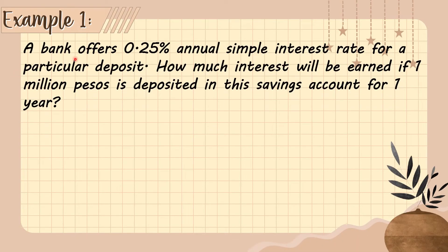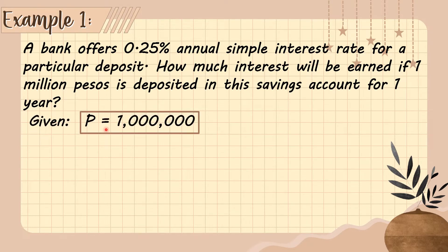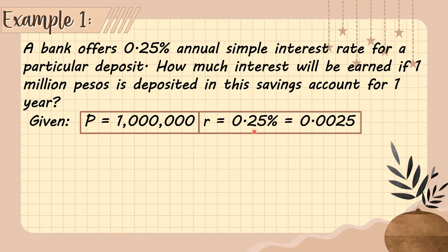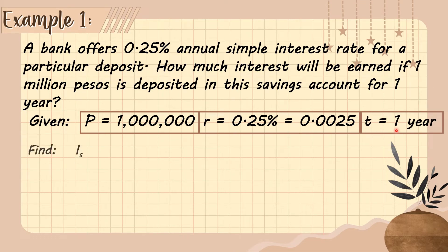Example number one: A bank offers 0.25 percent annual simple interest rate for a particular deposit. How much interest will be earned if one million pesos is deposited in this savings account for one year? The given: principal is 1,000,000 pesos, rate is 0.25% or 0.0025 in decimal form, and time is one year.